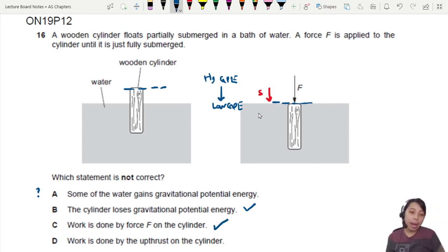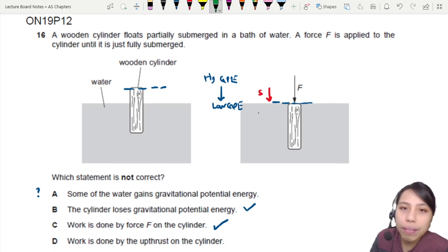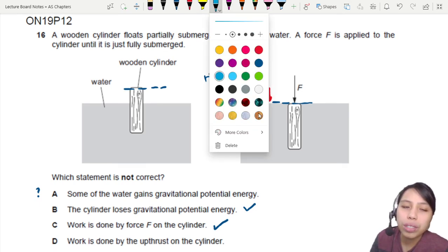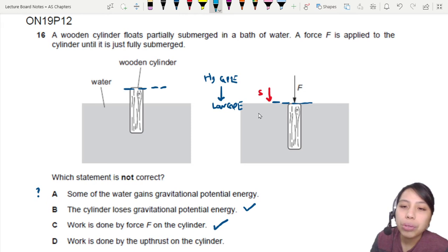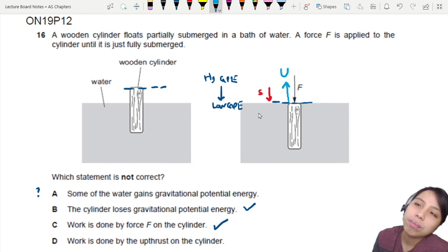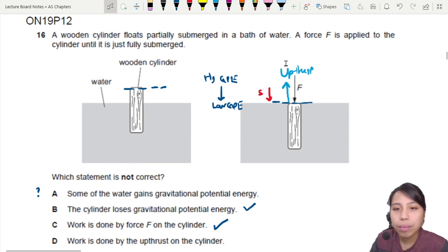Statement D says work is done by the upthrust on the cylinder. Where is upthrust? You have force F and other forces. Let's draw the relevant ones. There is upthrust pointing upward. Work done by upthrust? There is a change in height, so shouldn't there be work done by upthrust? Not exactly. The problem is upthrust is pointing up while displacement is pointing down.